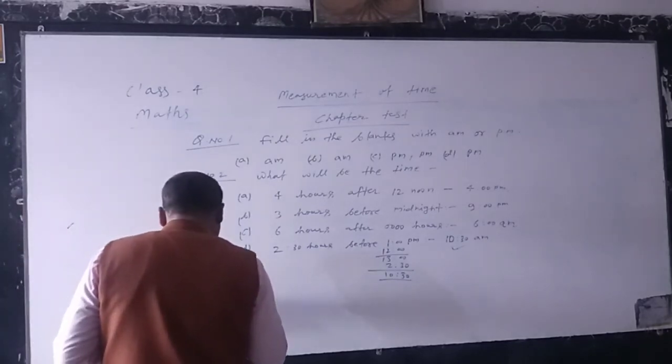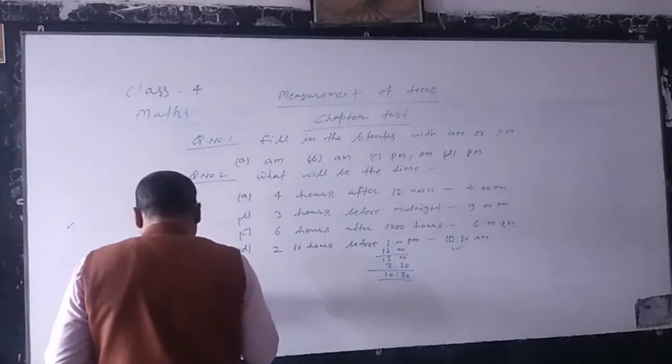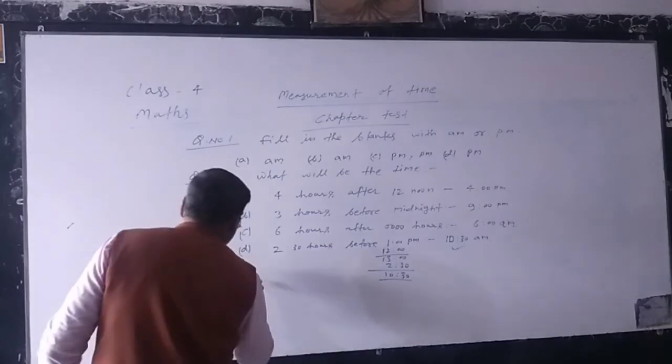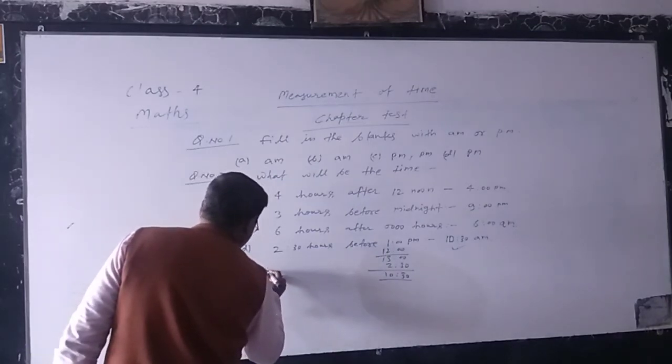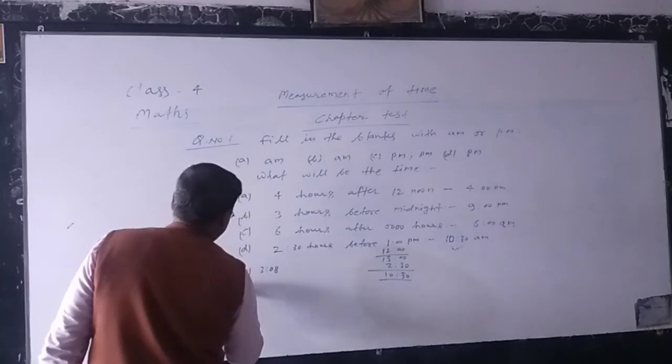A. 8 minutes past 3 is written as. Your correct answer is 3:08.